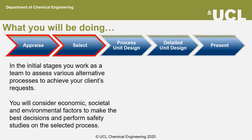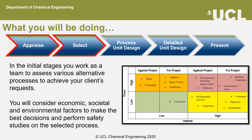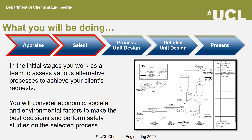In the first stages — appraise and select — you work in your teams and take your client's requests, analyzing your options from a wide-lens perspective. You consider technical, economic, environmental, safety and societal aspects. Here, for example, we are showcasing a power-interest matrix produced by one team in the 2019-2020 academic year. The power-interest matrix is used to assess the stakeholders involved in a project. And here, we have a sample of a process flow diagram produced by another team in the same academic year.